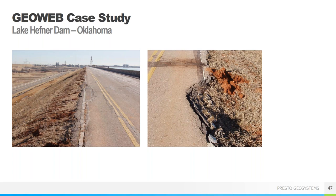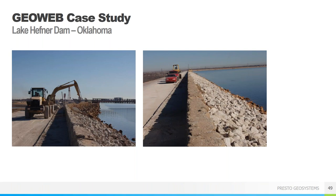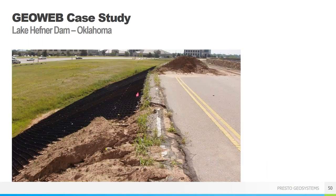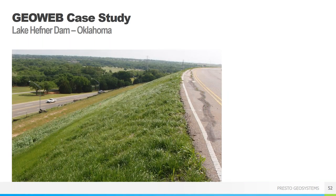Moving on to a vegetated solution: Lake Hefner Dam in Oklahoma experienced erosion damage along the bank and under the road on the dry side of the dam over a number of years from overtopping and sheet flow from the roadway. Excessive rains and high winds contributed to the overtopping issues. The lakeside of the dam was protected with new riprap, and the GeoWeb slope protection system was installed on the opposite embankment placed on the two-to-one roadway embankment and anchored with Atra stakes. The final result is a fully vegetated GeoWeb slope protection system.